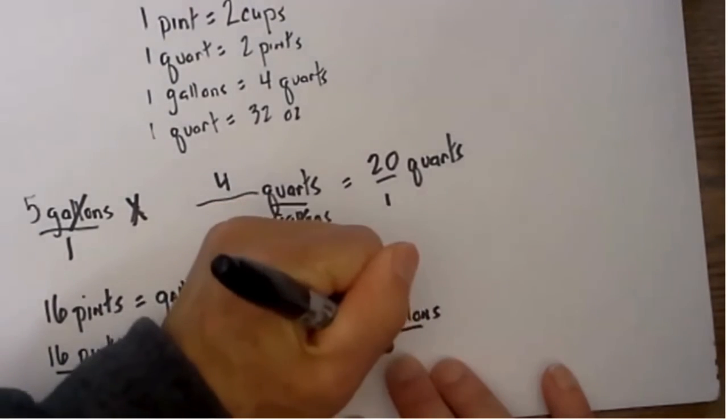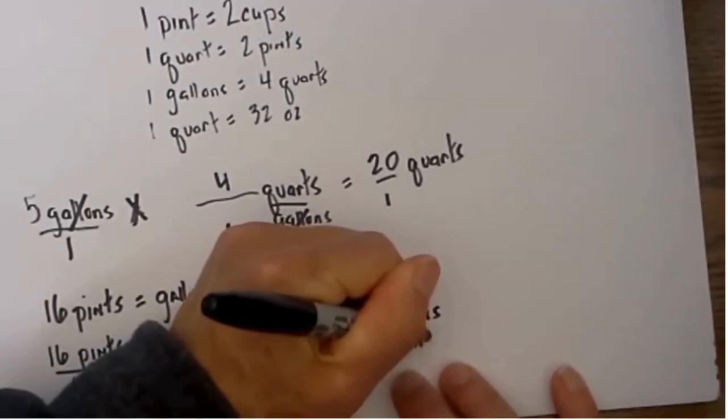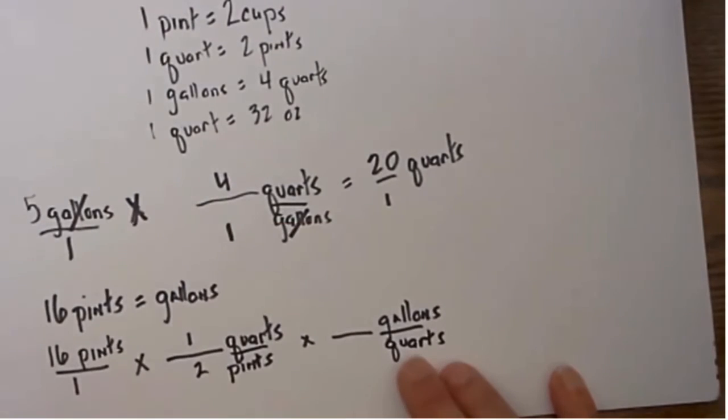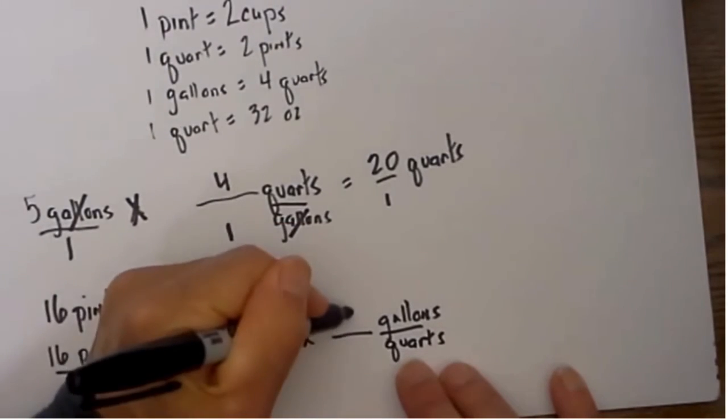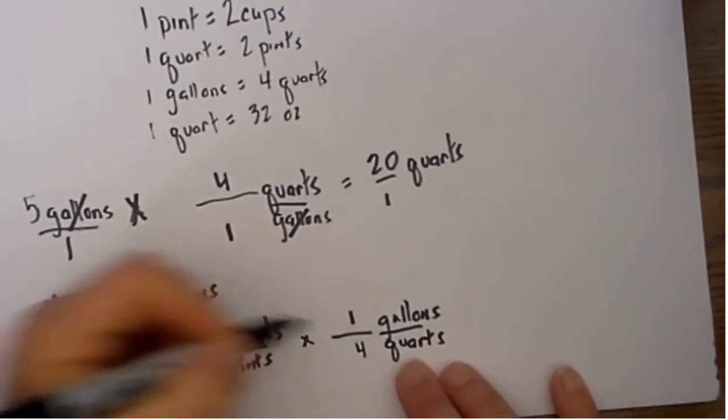I then put quarts on the bottom, ask which is larger, gallons or quarts. 1 gallon is equal to 4 quarts.